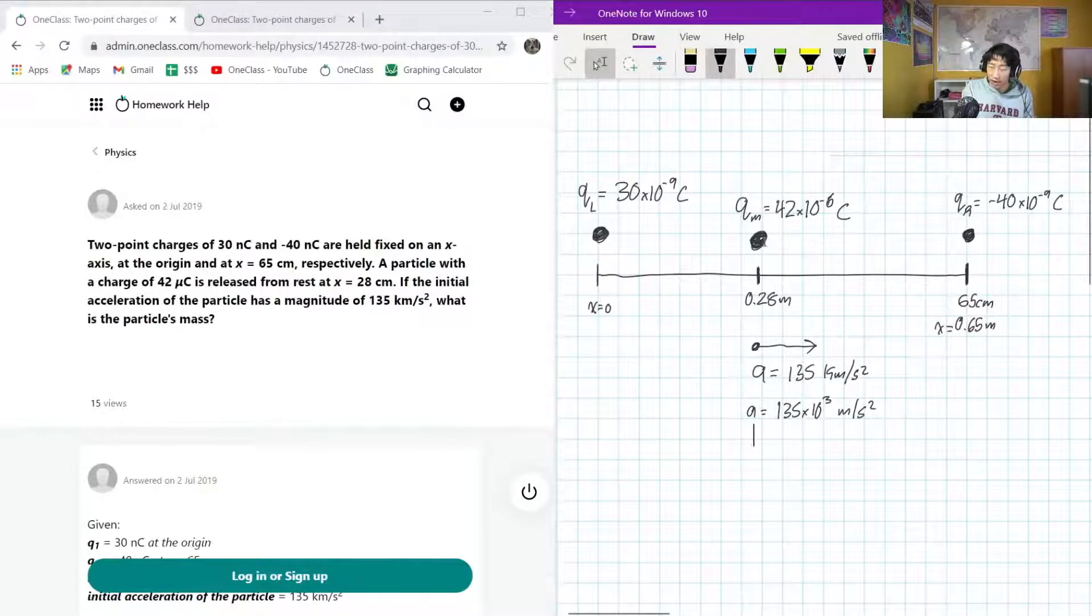Assuming QL is fixed, that means QM is going towards the right, and it's getting attracted to the right as well. So that's the only way that it could work. So, pretty much what this is, what's going on here is, let's color code these.